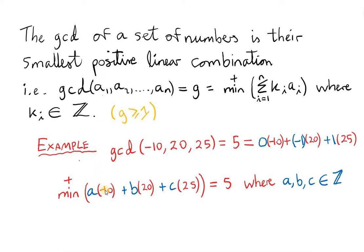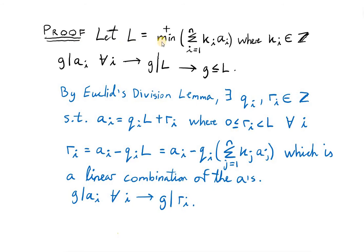The statement says that if we take all positive linear combinations of the integers minus 10, 20, and 25 — taking a, b, and c as integers but ensuring the combination is positive — the minimum of all those positive linear combinations will be 5. Proof: Let l be the minimum positive linear combination of all the a's with ki an element of Z. Since the greatest common divisor of all the a's divides each of the a's, g will divide any linear combination of all those a's. If g divides l, obviously g has to be less than or equal to l.